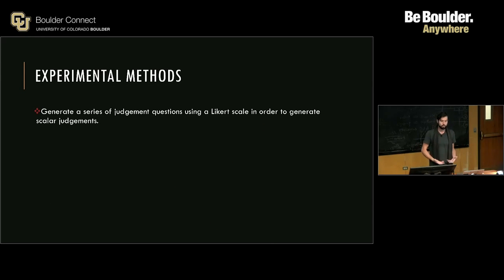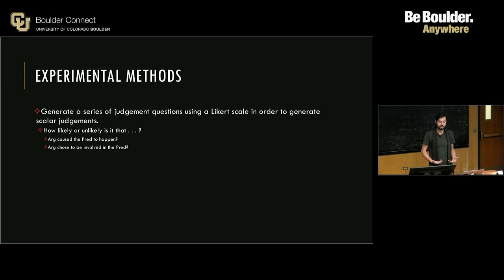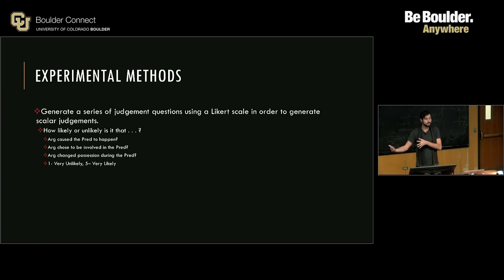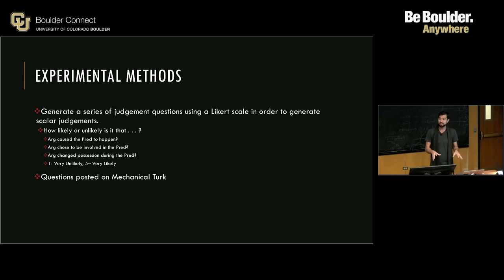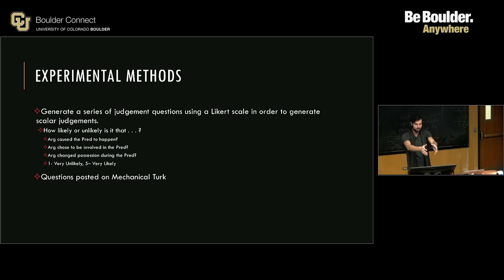Experimental methods. Step one: generate a series of judgment questions using the Likert scale in order to generate scalar judgments. This is framed in things such as: how likely or unlikely is it that the argument caused the predicate or event to happen? How likely or unlikely is it that the argument chose to be involved in the predicate — which is obviously testing volition. How likely or unlikely is it that the argument changed possession during the predicate? One was very unlikely, five was very likely. And here's their hack for getting as many annotations as they possibly could: they took these questions and sample sentences and put them on Mechanical Turk, at about five cents per question.